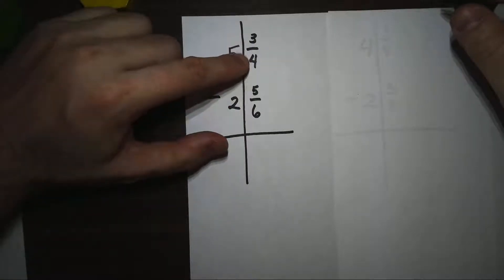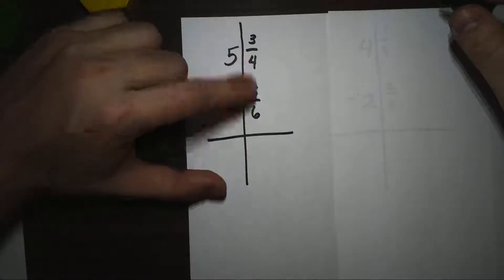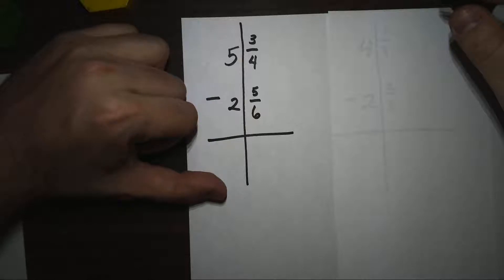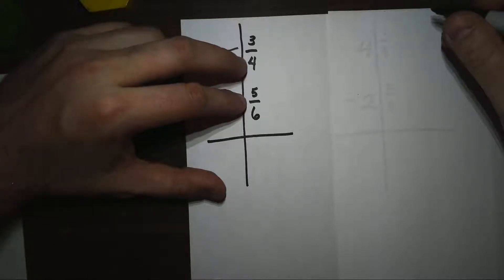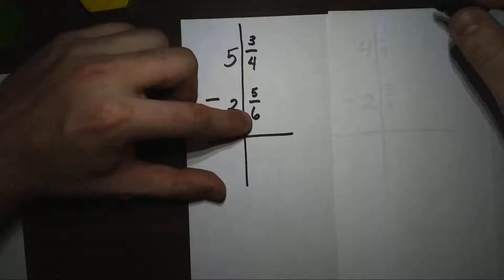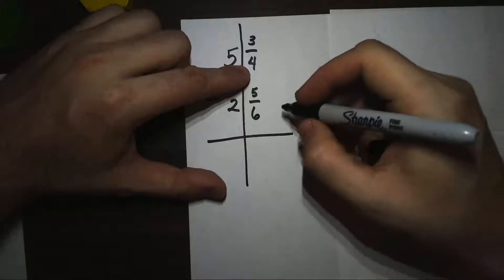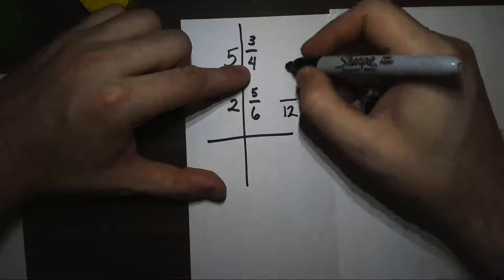The first thing I need to do is find a common denominator. 4 and 6 don't work with each other, so I have to find some number that works with both of them. If I think about a least common multiple for 4 and 6, I'm going to count by 6s, and my next number after 6 would be 12, and 4 does go into 12. So I'm going to use 12 as my common denominator.